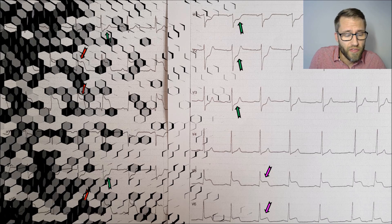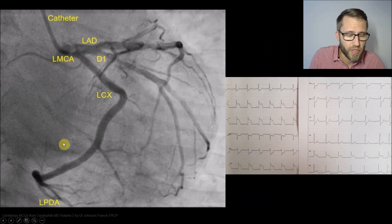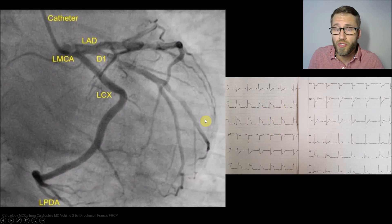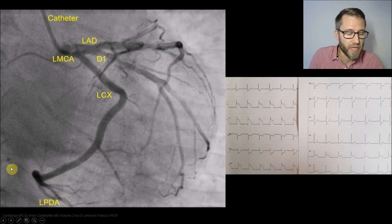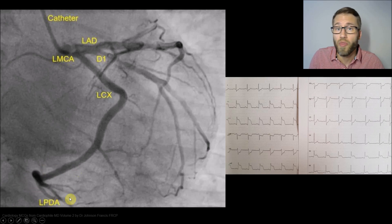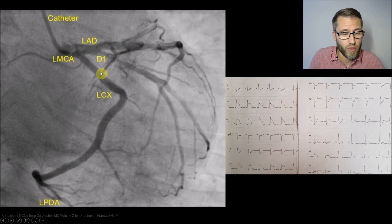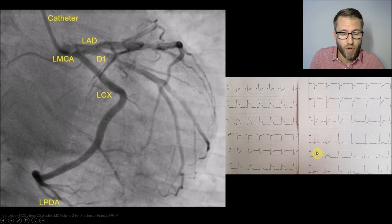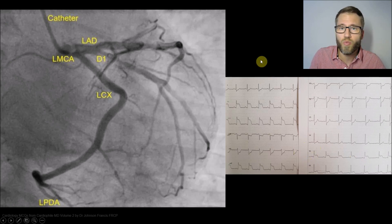The first possibility is that the culprit lesion would be on the LCX. If you have a very large LCX giving an LPDA or PDA coming from the left system, then the inferior myocardium of the left ventricle will be supplied by blood and oxygen via this LPDA from the LCX, encoding for the ST elevation in leads 2, 3, and AVF. And because of all the obtuse marginal branches, the posterolateral part is also supplied by the LCX, giving you ST elevation in V5 and V6. That is one of the two possibilities.